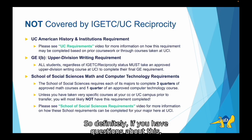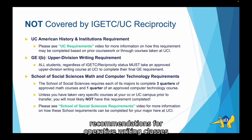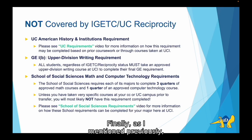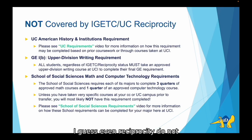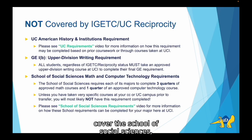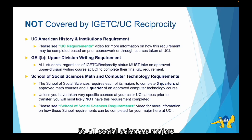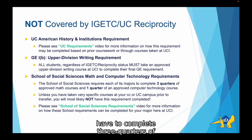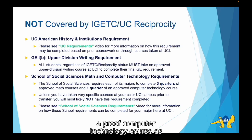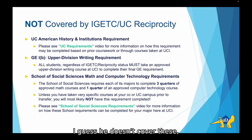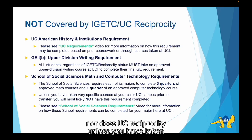If you have questions about the upper division writing requirement, please check in with your academic advisors for recommendations on approved writing classes you can take for your major. Finally, IGETC and Reciprocity do not cover the School of Social Sciences math and computer technology requirements. All Social Sciences majors have to complete three quarters of approved math courses and one quarter of approved computer technology courses as part of their school requirements. IGETC doesn't cover these, nor does UC Reciprocity.